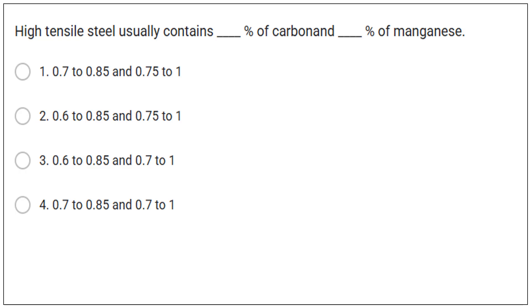The next question, question number 11. High tensile steel usually contains dash percentage of carbon and dash percentage of manganese. So there are 3 tensile steel. First one is low tensile steel. Second one is medium tensile steel. Third one is high tensile steel. So in case of low tensile steel, the percentage of carbon is 0.3%, for medium 0.3 to 0.6% and for high carbon 0.6 to 0.85%.